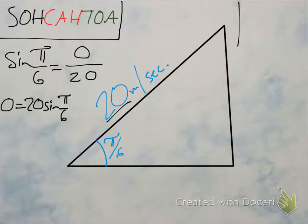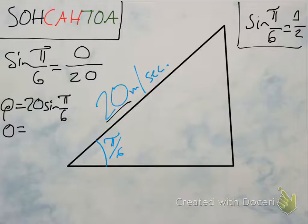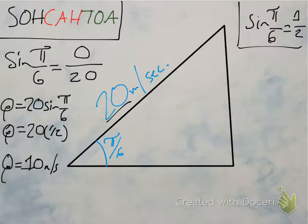We know that sine of pi over 6 — this is where it's good to know your unit circle — is just one half. So if sine of pi over 6 is one half, then opposite is equal to 20 times one half. Opposite is equal to 10. Now, 10 what? 10 meters per second. So our opposite side is 10 meters per second.